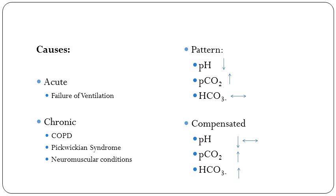The pattern: it's decreased pH because you're acidotic. It's now respiratory, so the right-hand side of the equation is affected — you're getting raised CO2. Your bicarb will be normal if it's uncompensated. If it's compensated, you'll get the same pattern, and your pH might be normal. That's a really important thing: with any compensated acidosis or alkalosis, the pH may be normal. A normal pH doesn't necessarily mean anything.